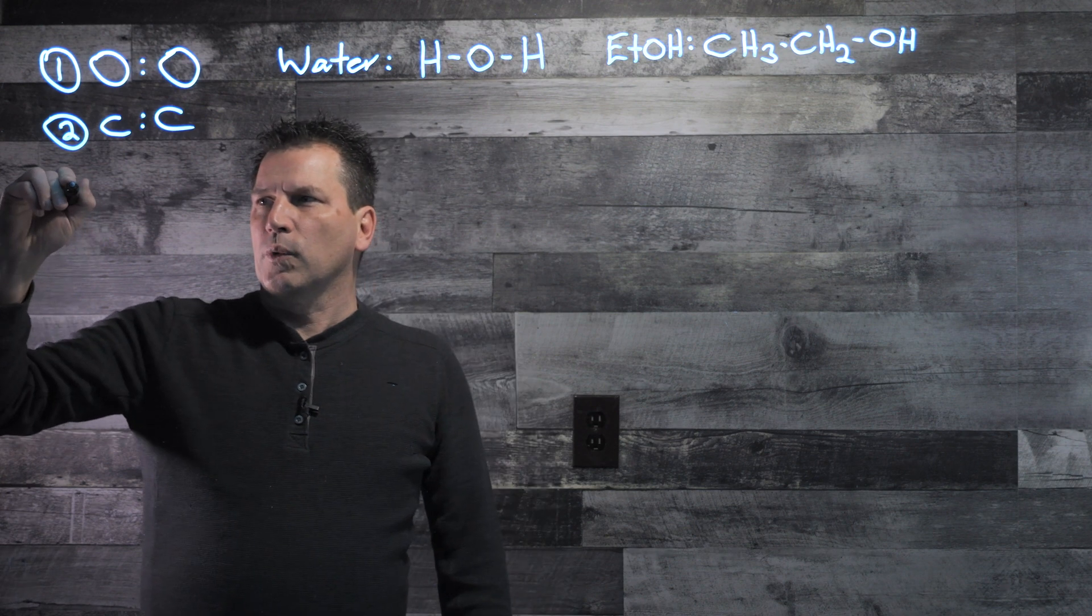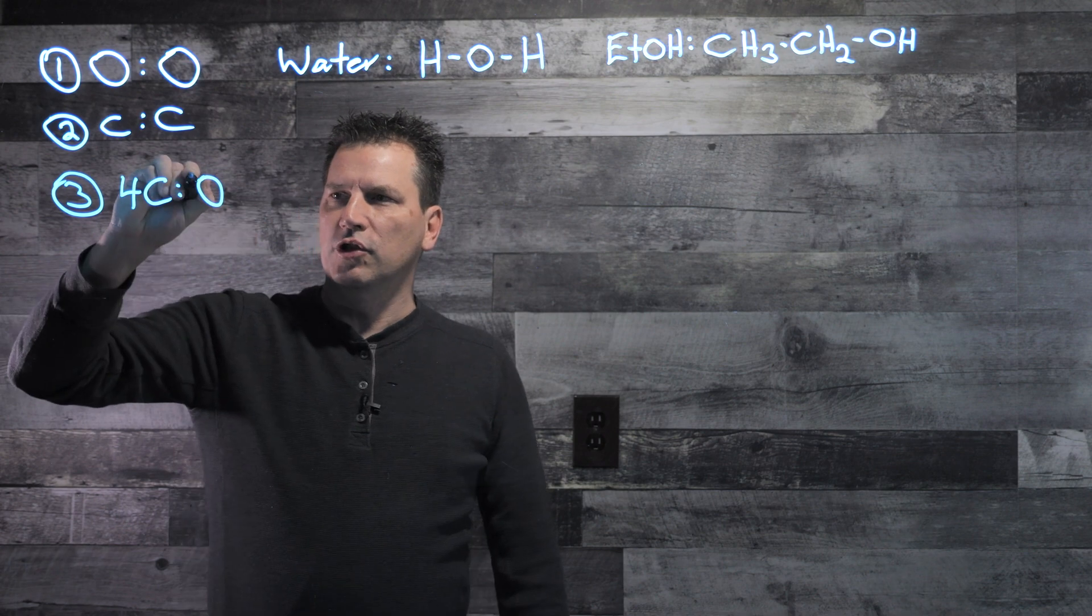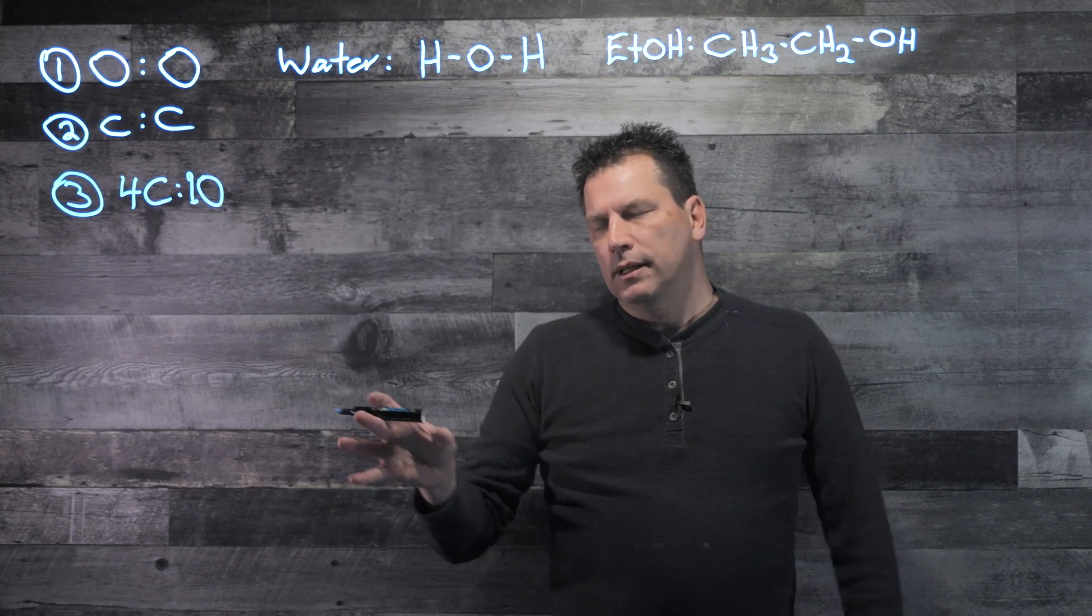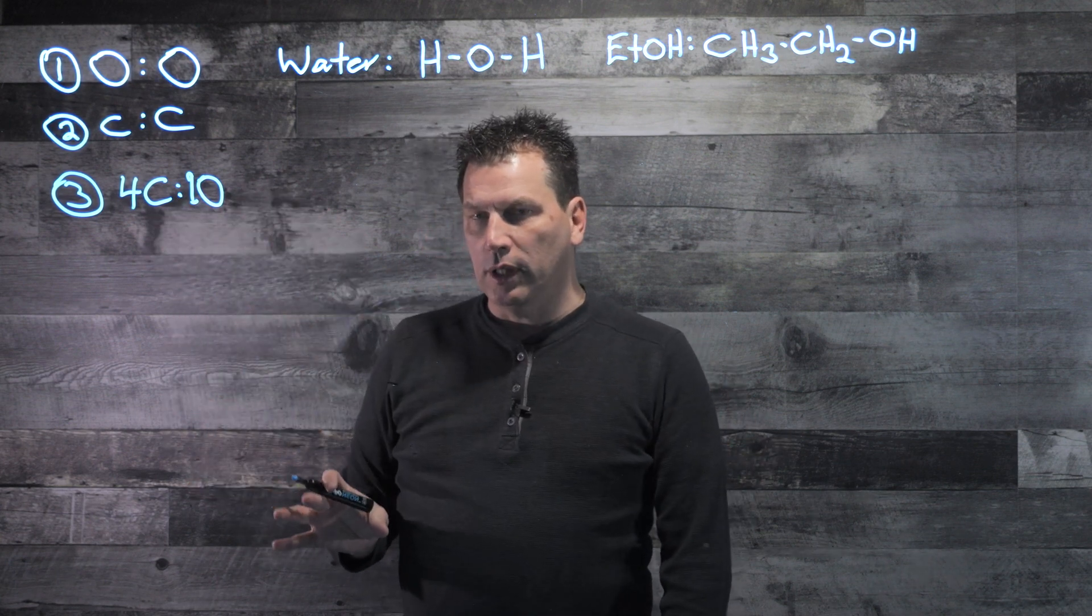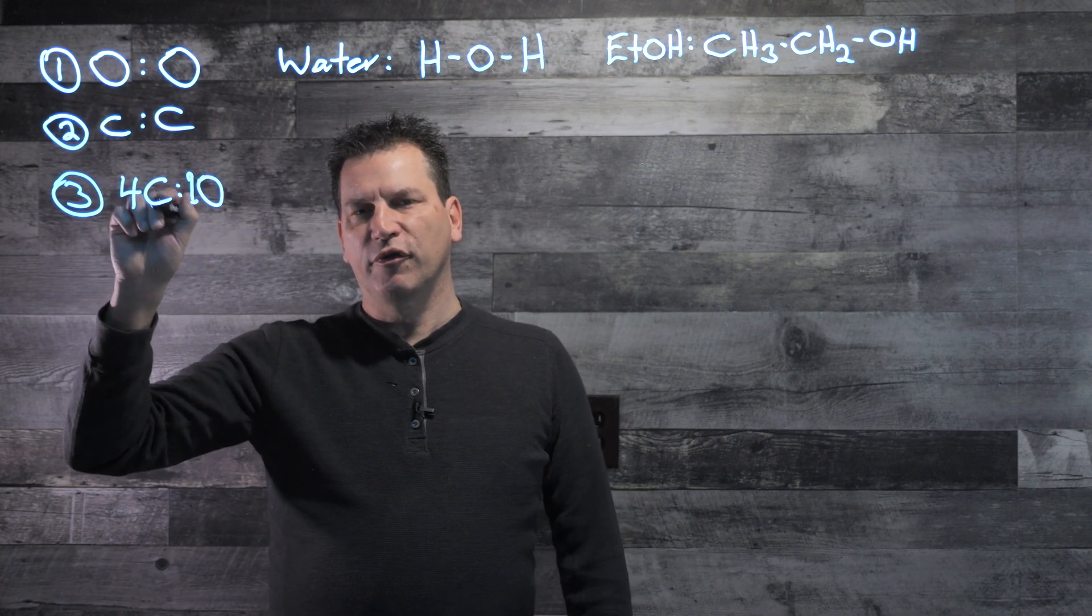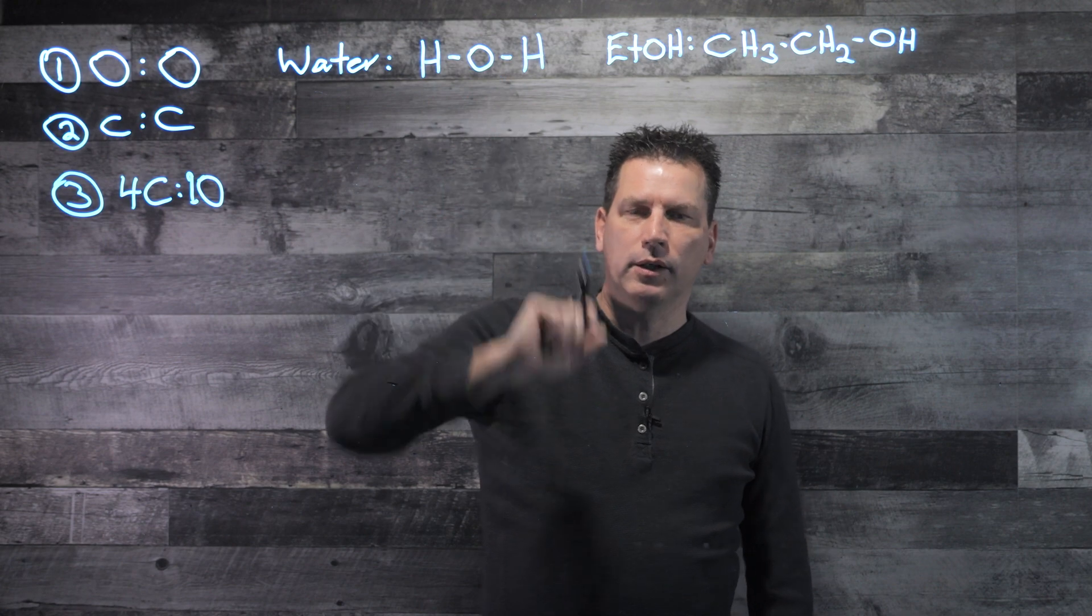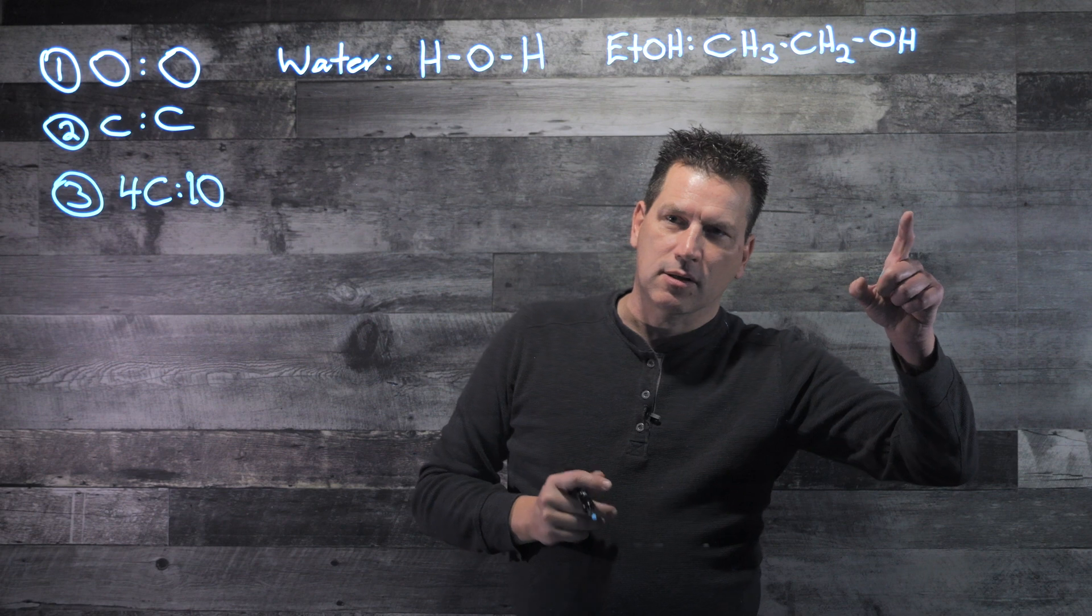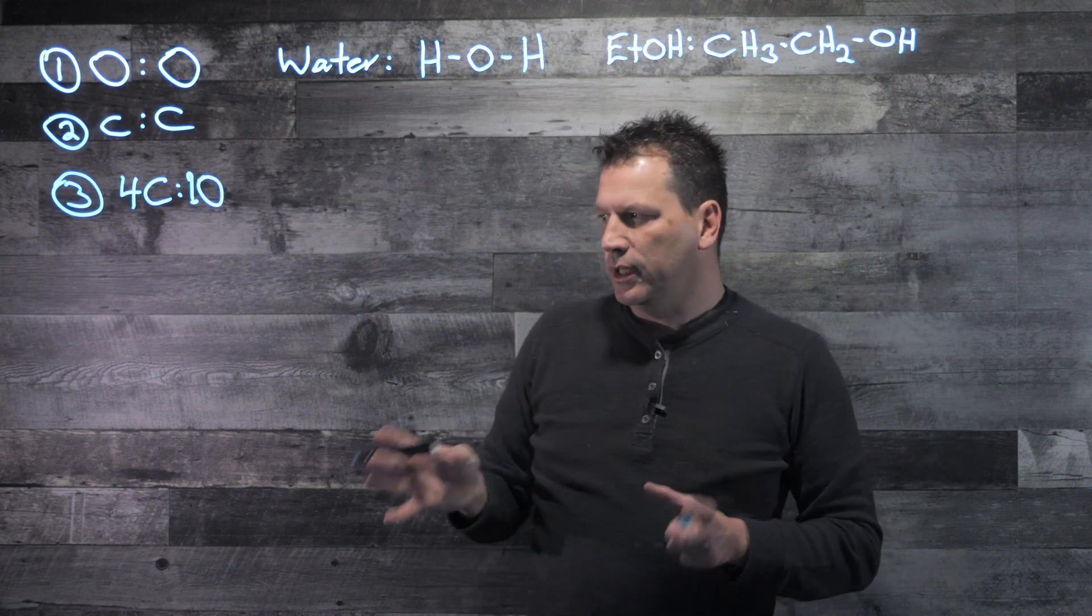So rule number three is there's a ratio of four carbons to one oxygen. So that's not a 10, it's a one. But the idea is that when you're looking at a molecule, and I'm going to draw a few here to play, as long as there's one oxygen for every four carbons, it's going to be slightly soluble in water, most likely always soluble in ethanol.